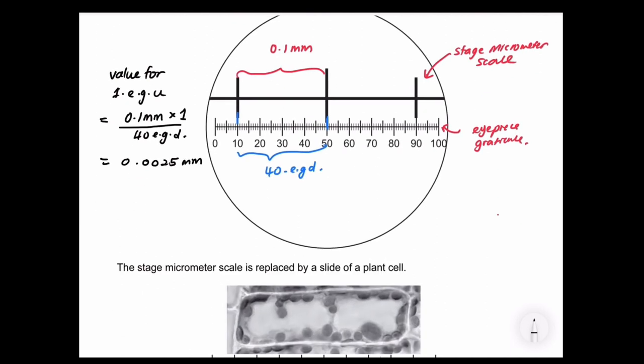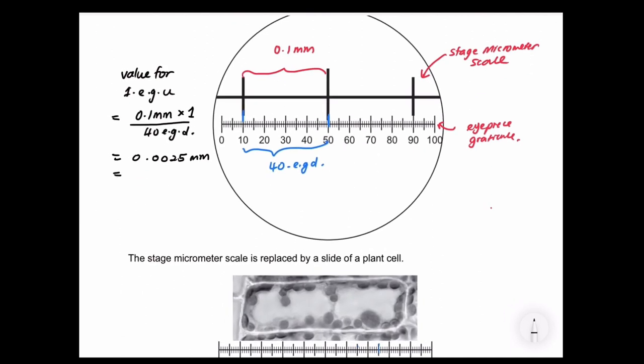So since the answer required is in micrometer, I'll convert to micrometer. It will be times 1000. So I'll get 2.5 micrometer. So this is the value for one eyepiece reticule unit.